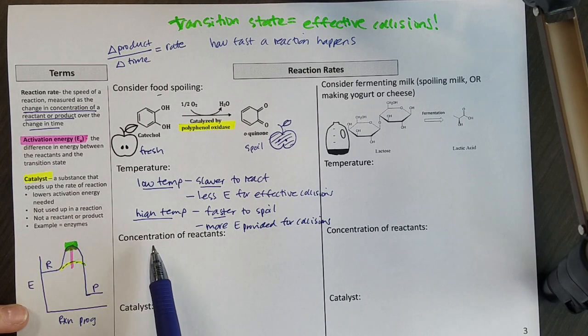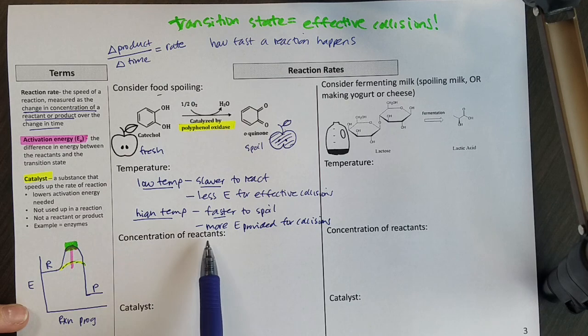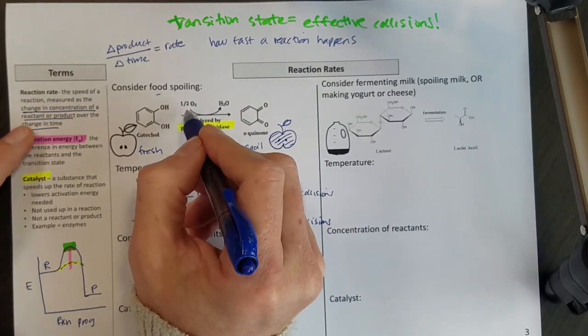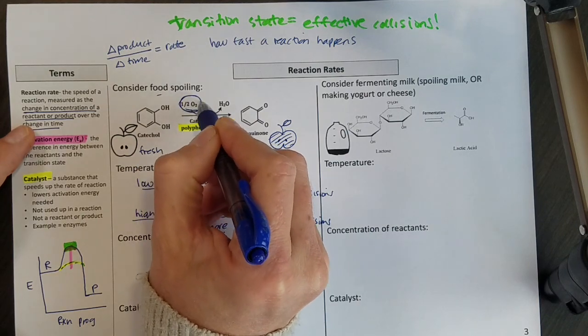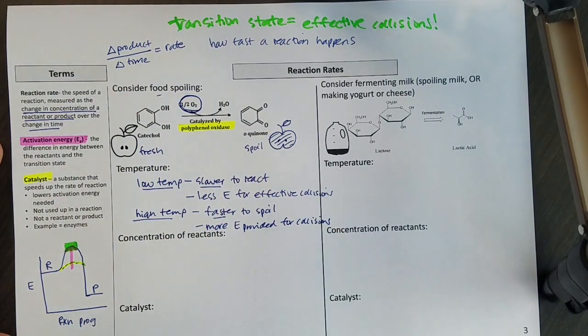The next thing we're going to look at that affects reaction rate is the concentration of reactants. And one of the reactants that you can see in this reaction up here is oxygen. The more oxygen you give your food, the faster it spoils. That's why we vacuum seal it and can it and all those things to keep the oxygen away from our food.